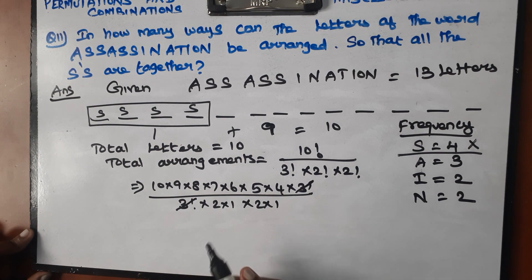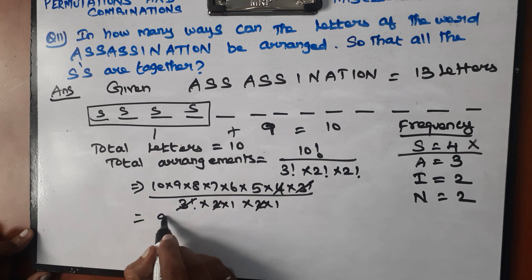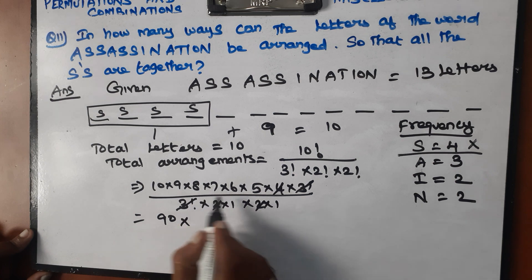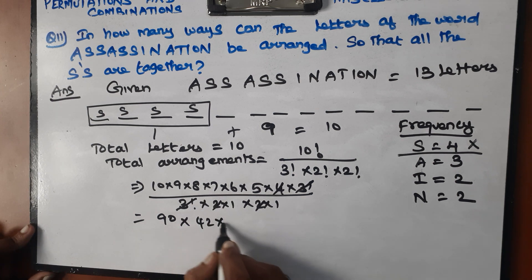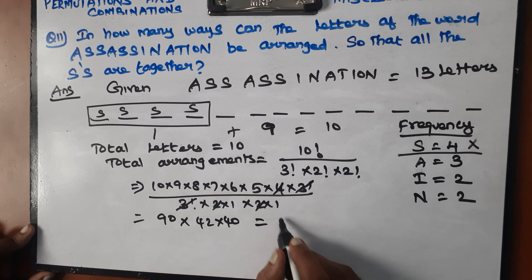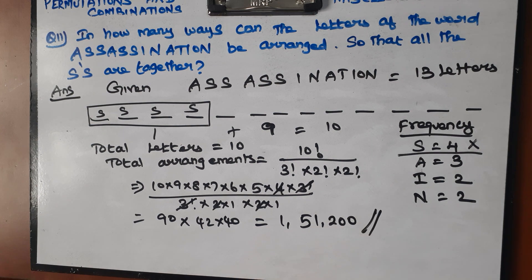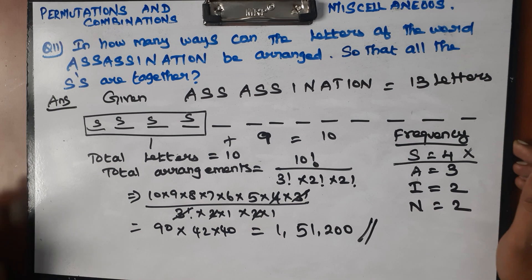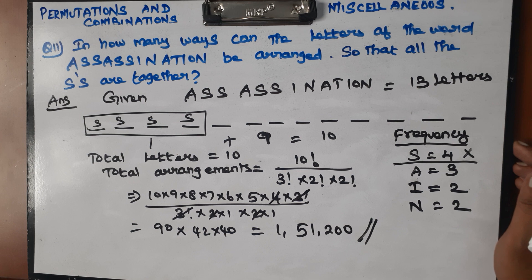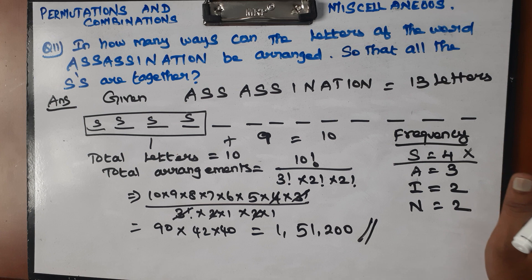The 3 factorials cancel, and 2 × 2 = 4 cancels. The remaining multiplication gives us 10 × 9 × 8 × 7 × 6 × 5 = 1,51,200. So the answer is 1,51,200. That completes Chapter 6 on permutations and combinations. Thank you.